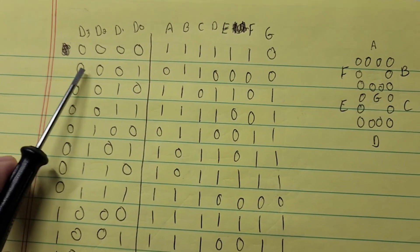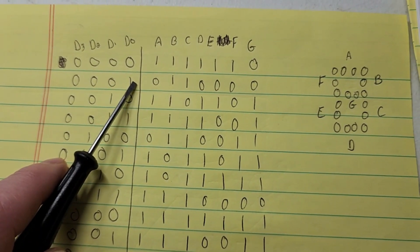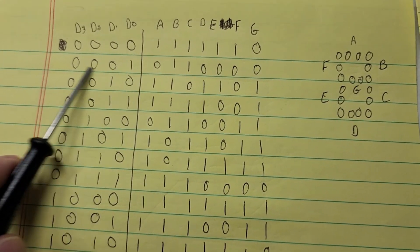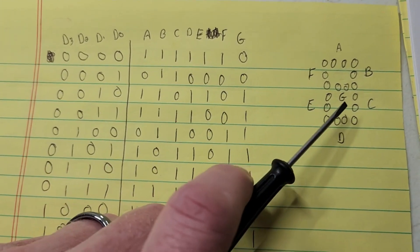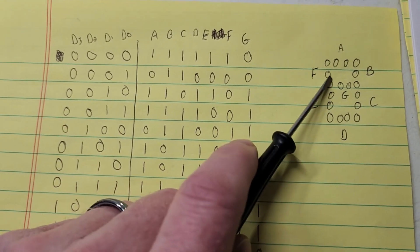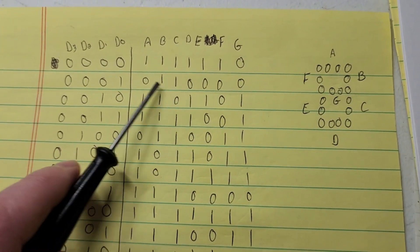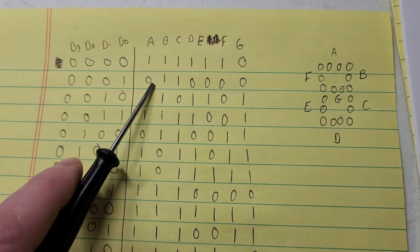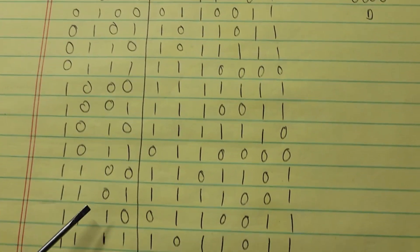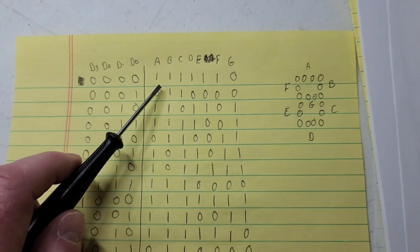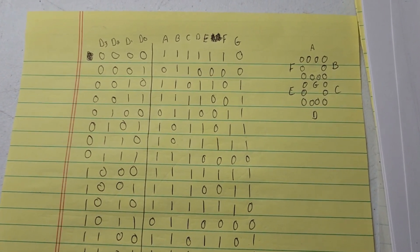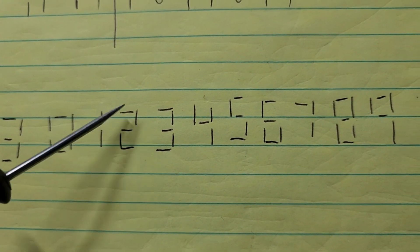For the number one — binary 0001 — I only need segments b and c lit up, all others off, and that shows a one. I continued filling in the truth table all the way through 15, using a segment diagram to figure out which LEDs to light for each number. It made it much easier to keep track of which segment to turn on for each digit.